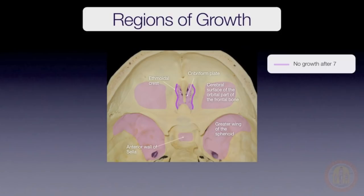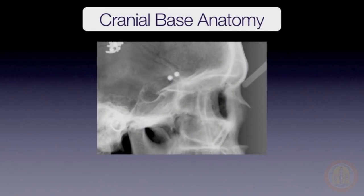The midline structures between the anterior wall of sella and the cribriform plate, commonly known as the planum sphenoidale, are mostly stable after age seven, but some bony apposition is possible up to age 14. All of these structures can be readily identified on most lateral cephalograms.